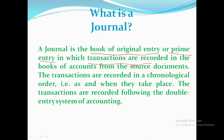The transactions are recorded following the double entry system of accounting. So we can say that a journal is a book of original entry or prime entry in which transactions are recorded in the books of accounts from source documents. Source documents are your daily transaction books from where you can enter the journal entries in the journal book.